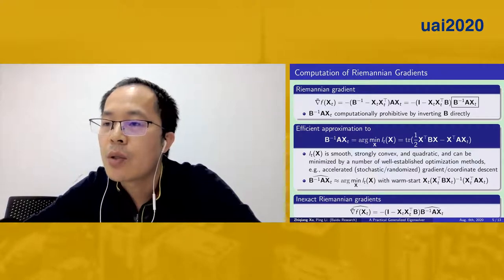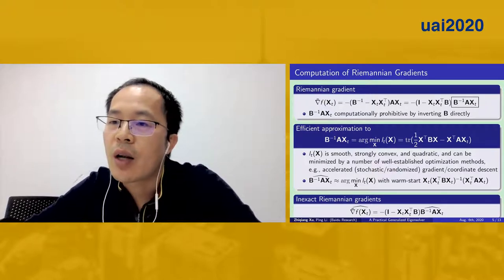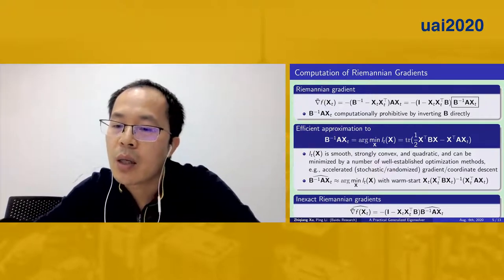Particularly, we can leverage previous information to warm-start the least-squared solver. Finally, we get an inexact Riemannian gradient.